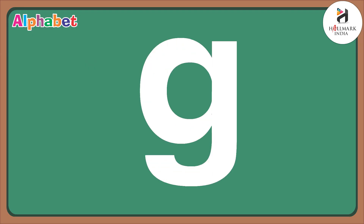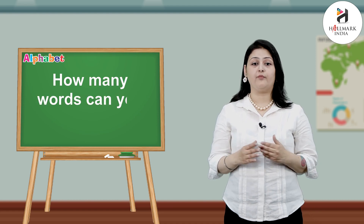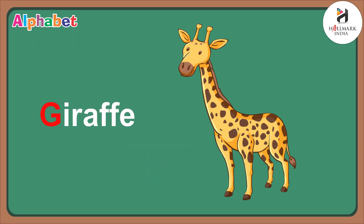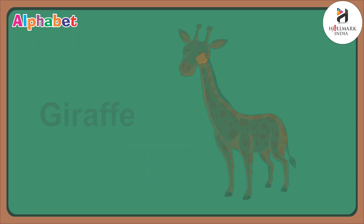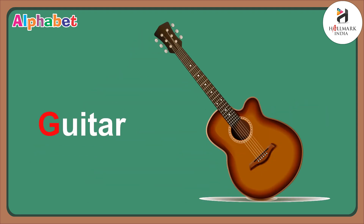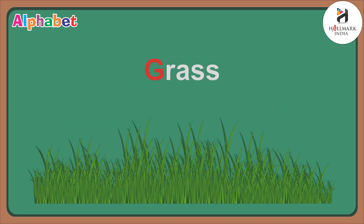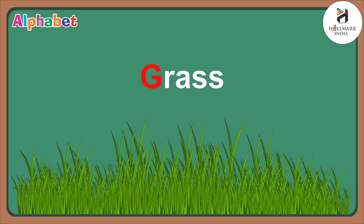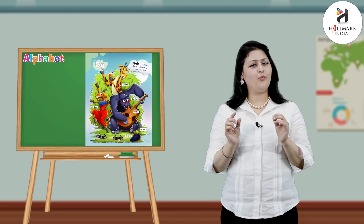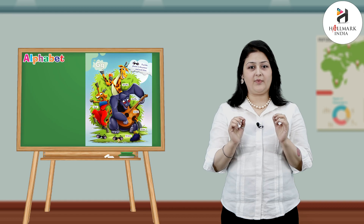Now we will learn the words that start with the alphabet G. The first word is giraffe, the second word is gorilla, the third word is guitar, the fourth word is gold, the fifth word is grass, and the sixth word is grapes. Now kids, there is a small exercise which we will be doing on every alphabet.